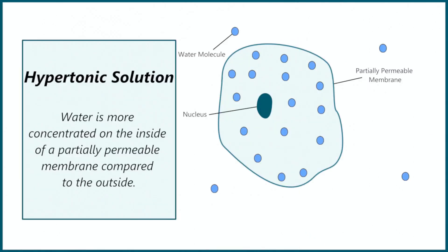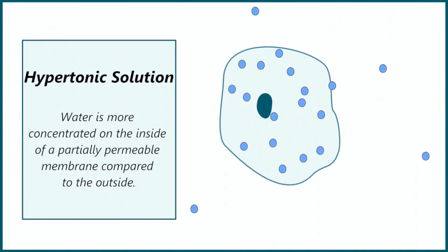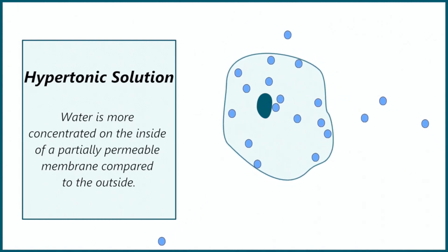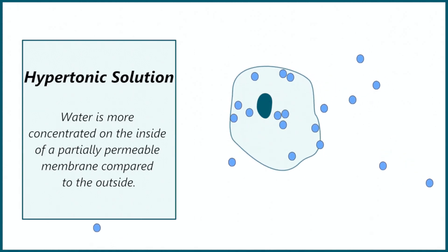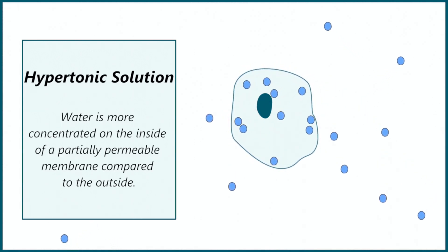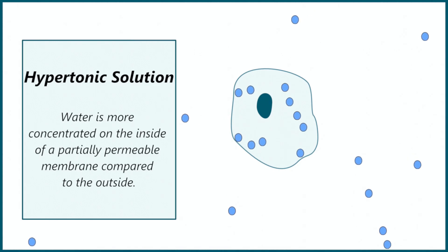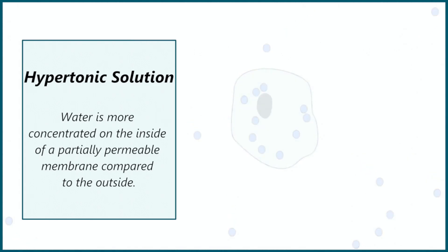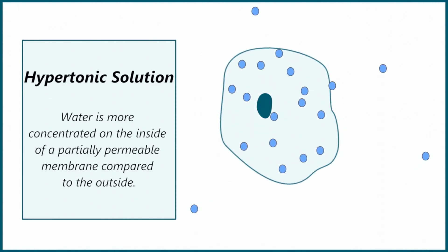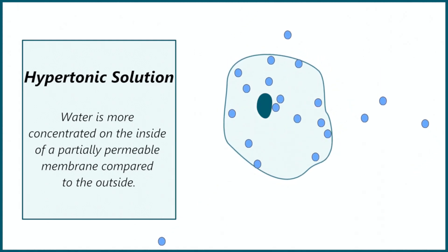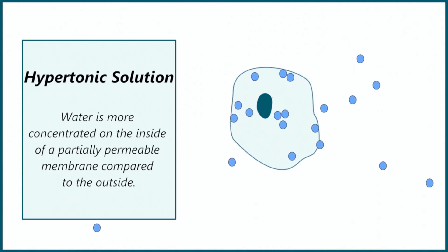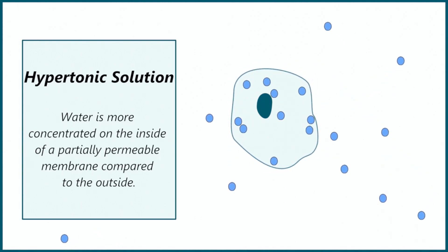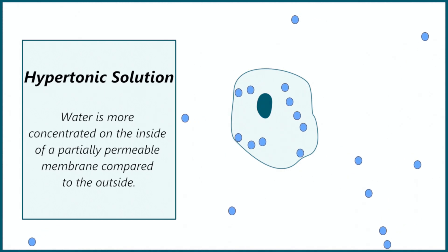For this cell the water is more concentrated on the inside of the cell compared to the outside. This means water moves from a higher concentration inside the cell to a lower concentration outside the cell by osmosis across the partially permeable membrane. This causes the cell to shrivel up. When water is more concentrated inside the cell compared to the outside it is known as a hypertonic solution.